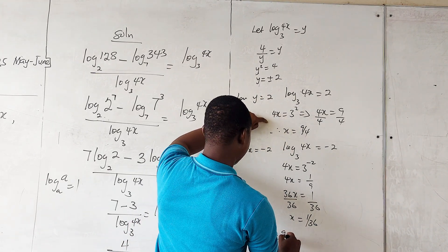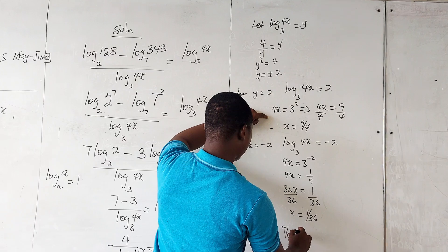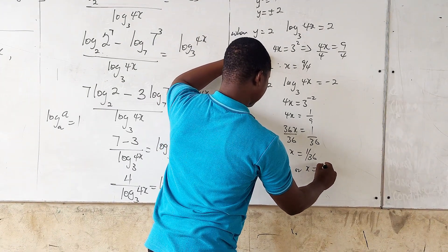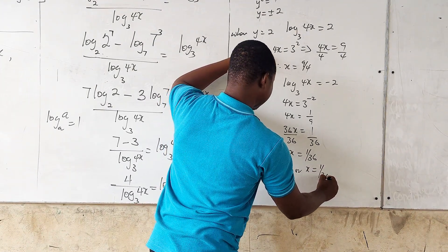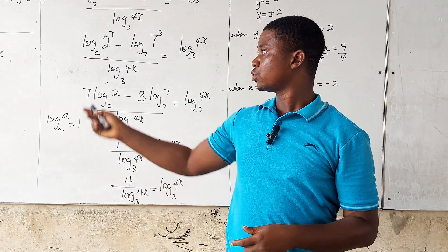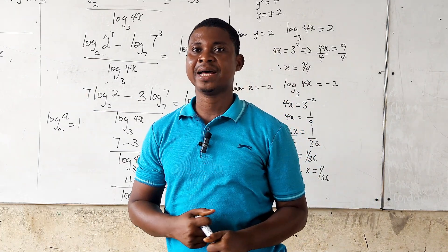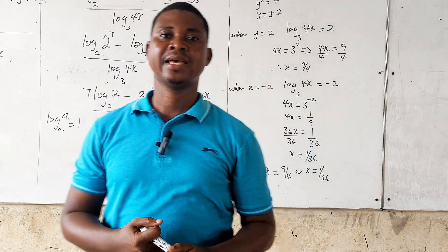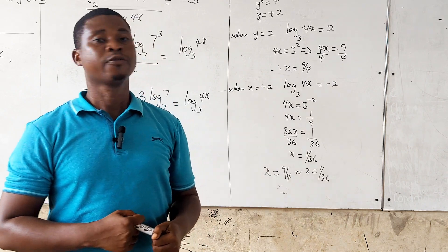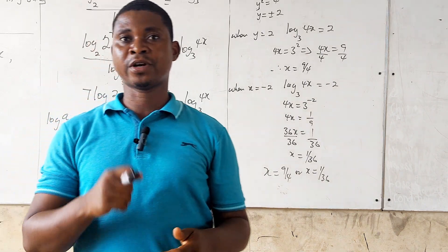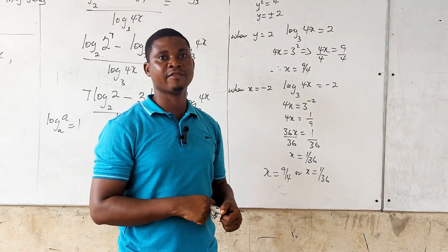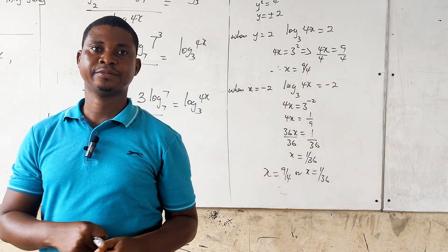So we have two answers: x equals 9 over 4, or x equals 1 over 36. This gives us the solution to question number 10a. Please continue to subscribe to our maths class on all our social media handles. Have a nice day, bye bye.